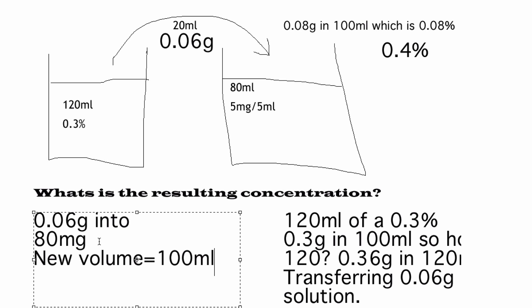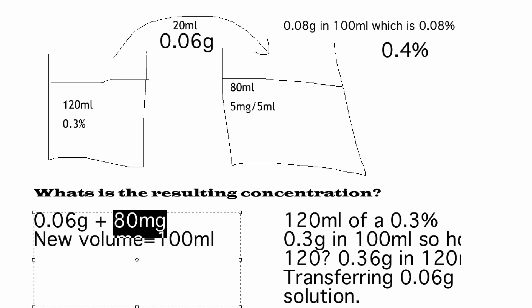So you're putting 0.06 into 80 milligrams. What is the new volume? You've got 5 milligrams in 5 mils and you've got 80 mils. So what you do is you go 80 divided by 5 times 5. So it's 80 milligrams to the new volume. So what you've got to do is add this to this. I would tend to convert this into grams. What is 80 milligrams in grams? 0.08. Very good. And what do you get when you add these together?